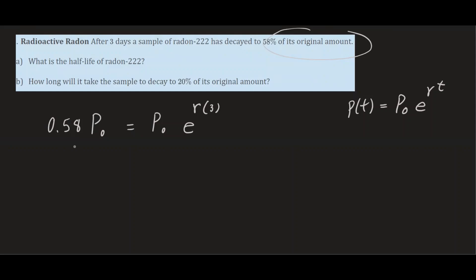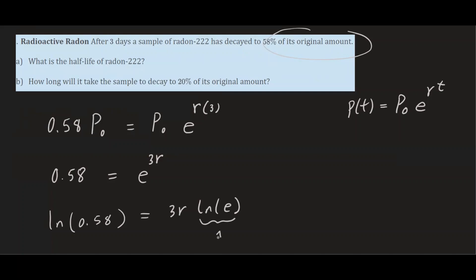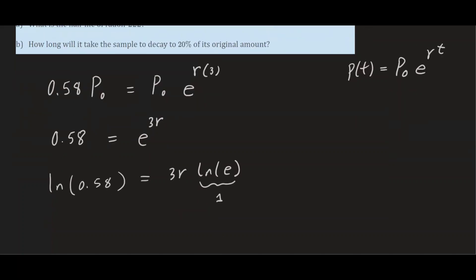We divide both sides by P₀, giving us 0.58 = e^(3r). To eliminate e and bring down the exponent, we take the natural log on both sides: ln(0.58) = 3r·ln(e). Since ln(e) = 1, we get r = ln(0.58) / 3. That's our rate.